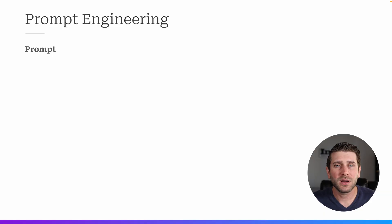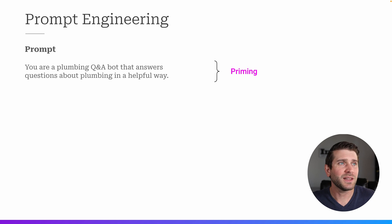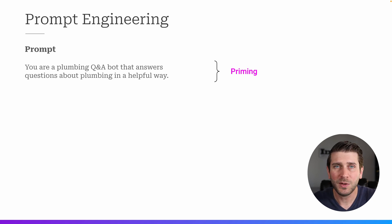So let's start with prompt engineering. Even though we're all probably pretty familiar with this, it's a good starting point for how we can add RAG and fine-tuning to some prompt engineering that we've already done. A typical prompt has some kind of priming, like: you are a plumbing Q&A bot that answers questions about plumbing in a helpful way.